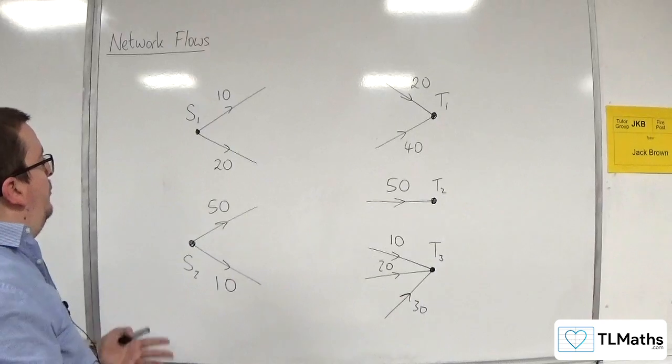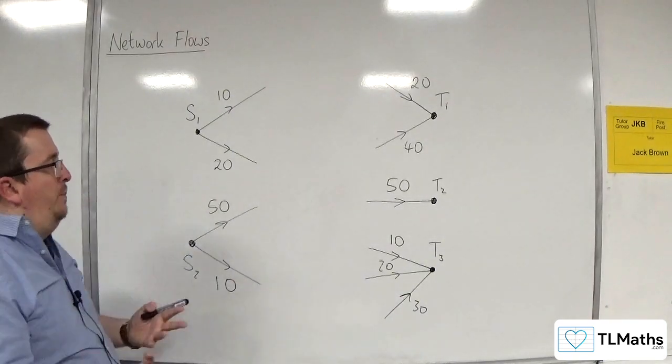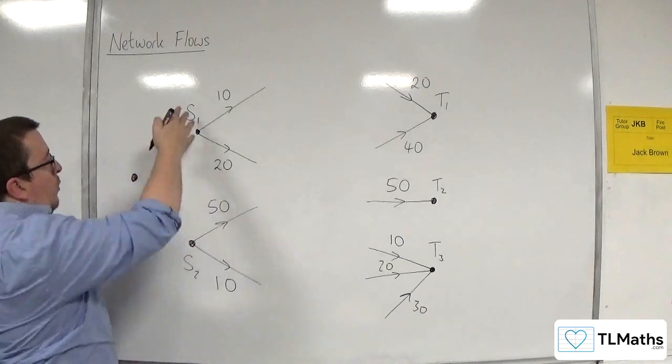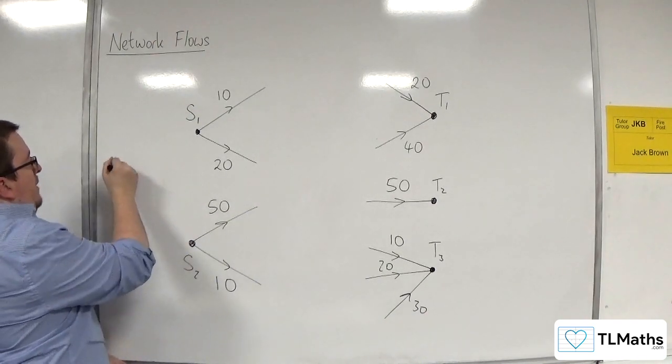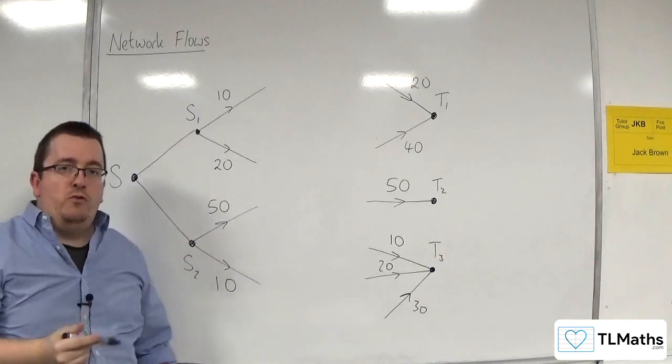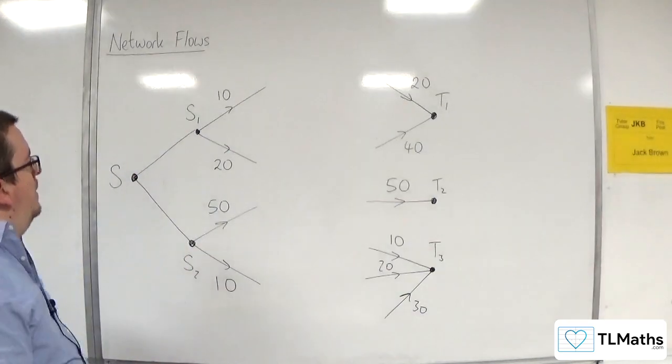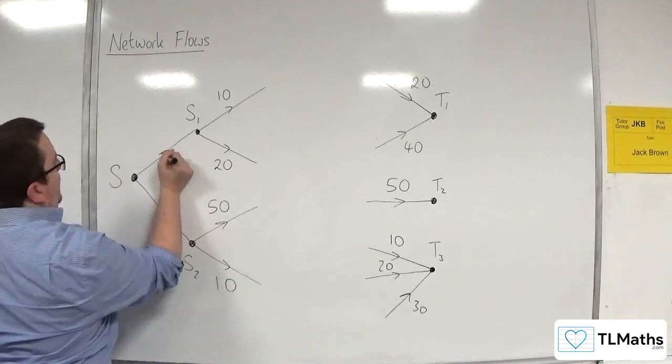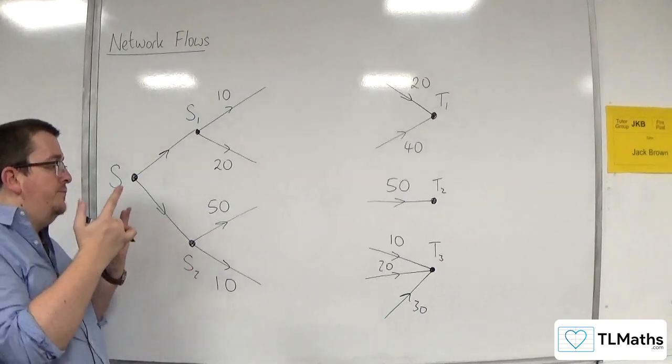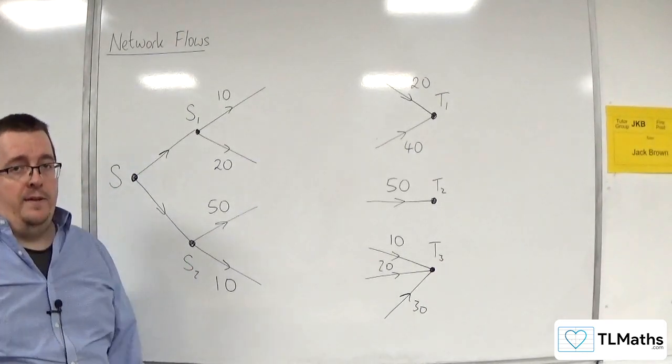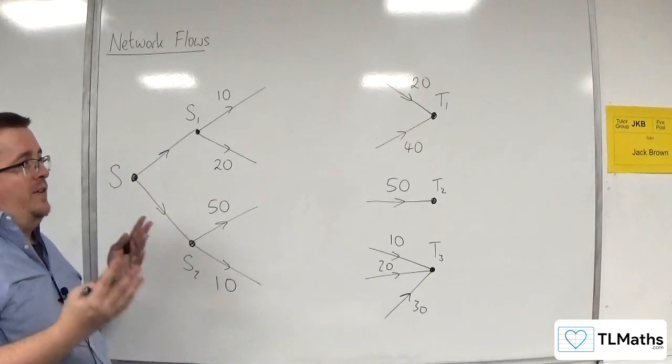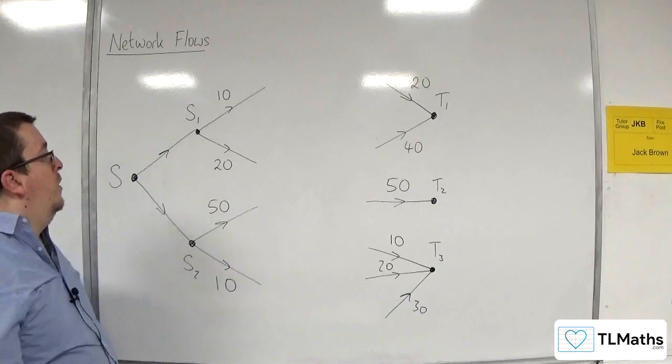So how can we add in a super source? Well, the idea is a super source allows you to link up all of your sources. I'll call this S and it links these up. Now these are effectively imaginary pipelines, if you like. And what we've got to do is add on the arrows that go with it, the direction of flow, and also a capacity. Now because they're made up, they just need to have a capacity that works with the system that you've got.